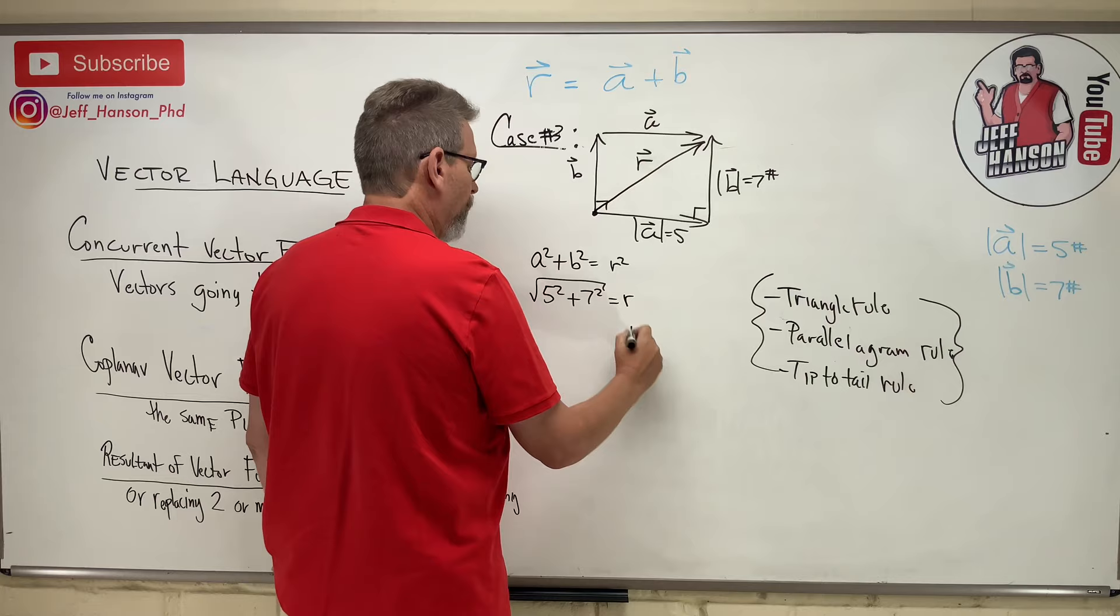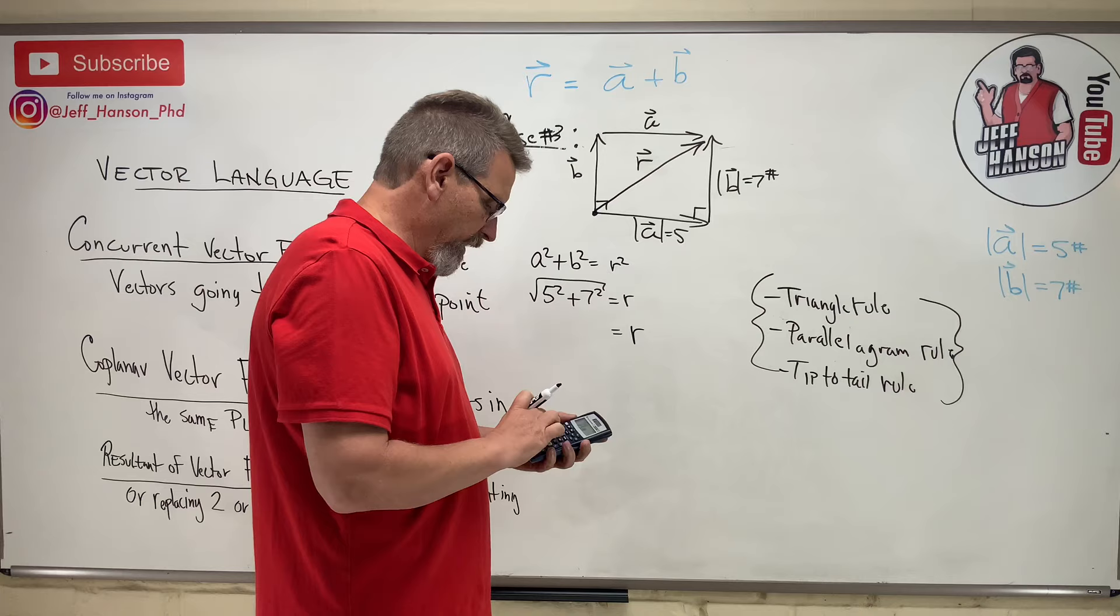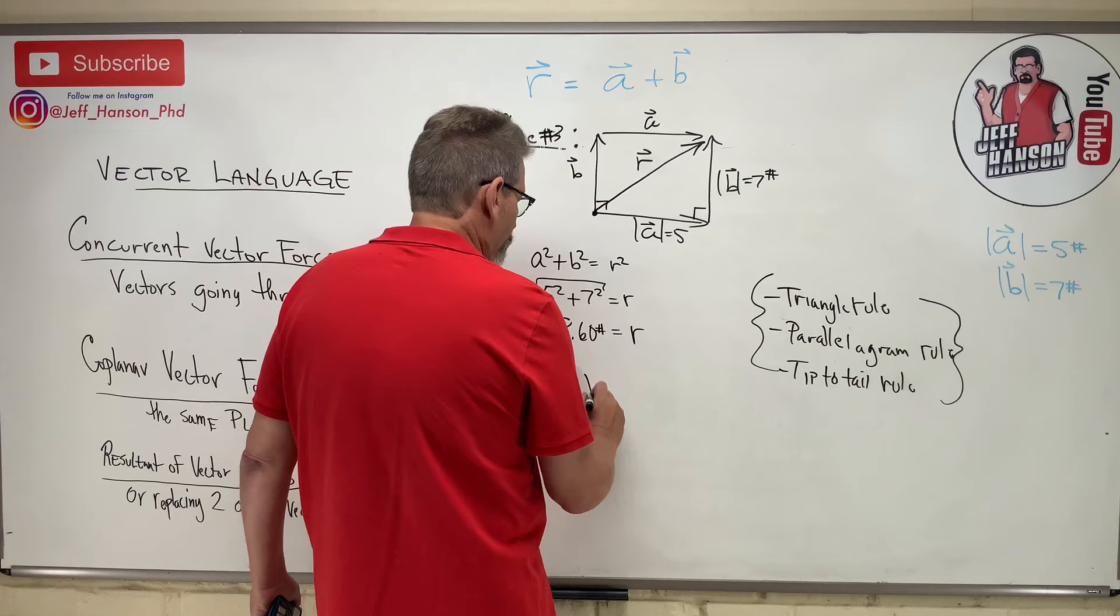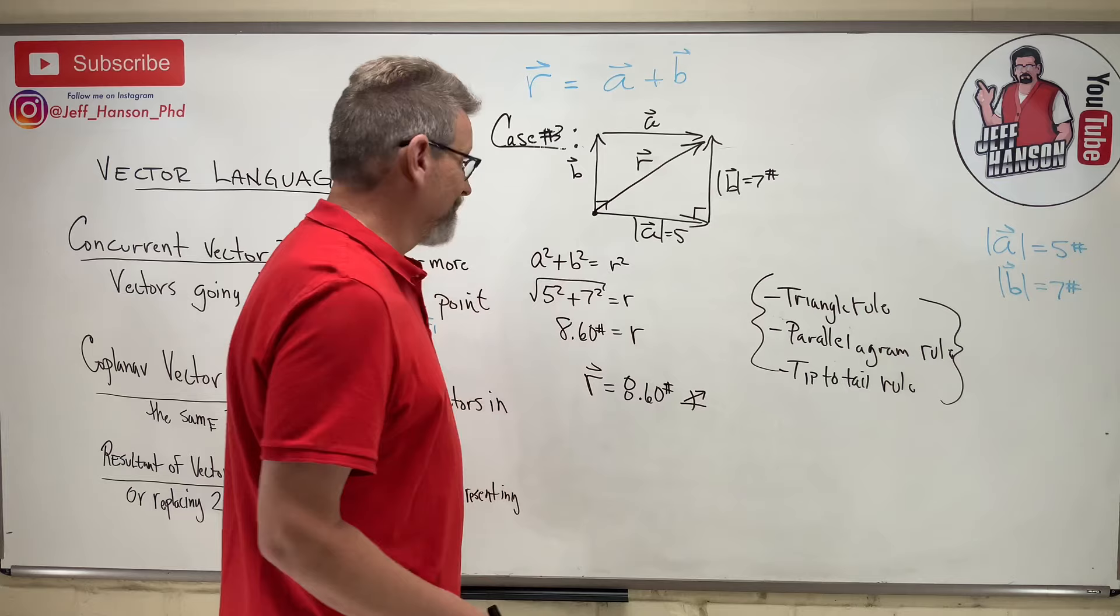So, that would be 5 squared plus 7 squared square root is equal to R, and so R equals calculator. See you later. So, 5 squared plus 7 squared equals square root of the answer, 8.60. So, vector R is equal to 8.60 pounds. Oh, yeah. I definitely need some direction here. I do need some direction in my life.